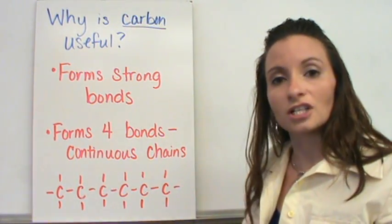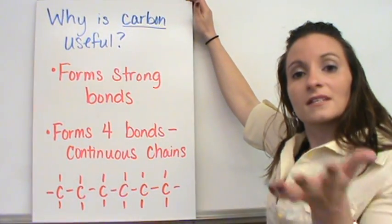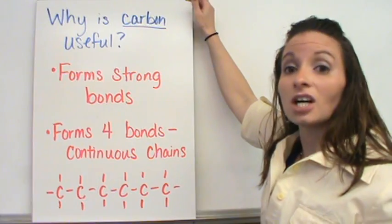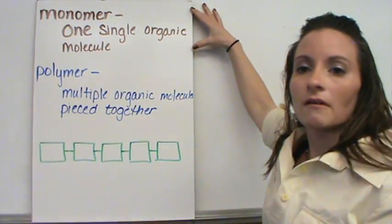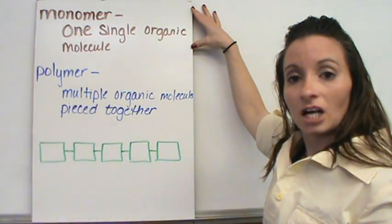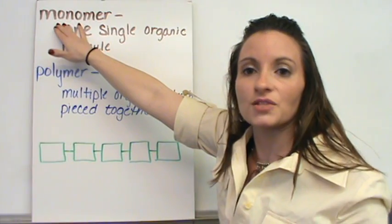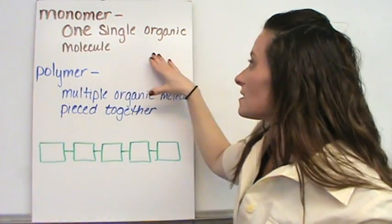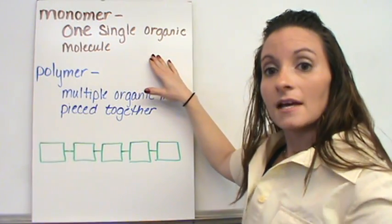It makes these very large compounds. Now, these very large compounds can be formed into even larger compounds. Now, the single organic compounds that we have are called monomers. Remember, the term mono means one. So, a monomer is a single organic molecule or a single organic compound.